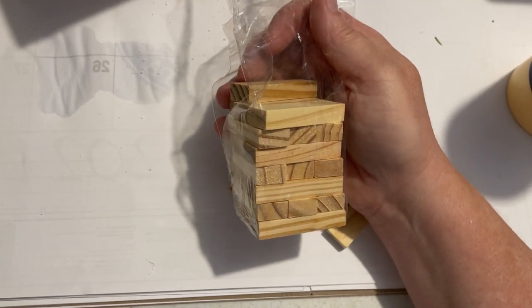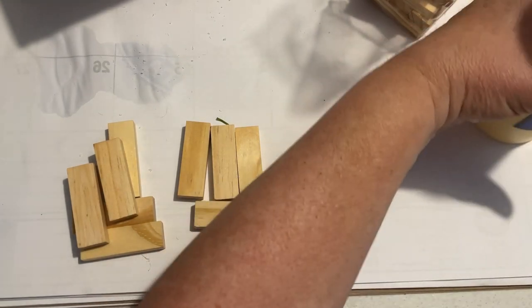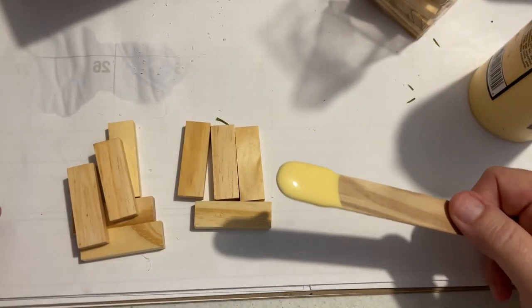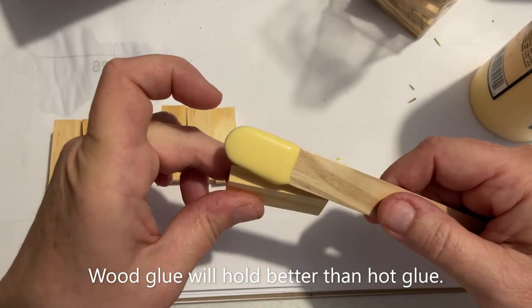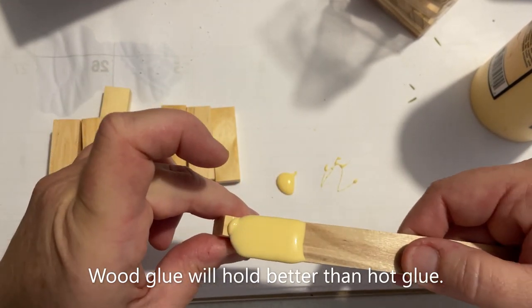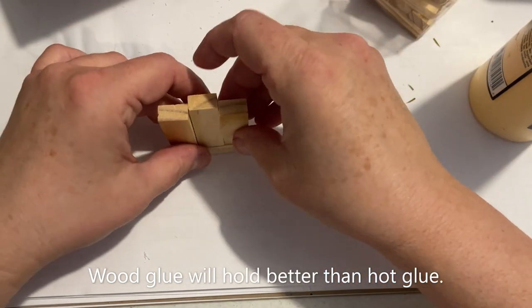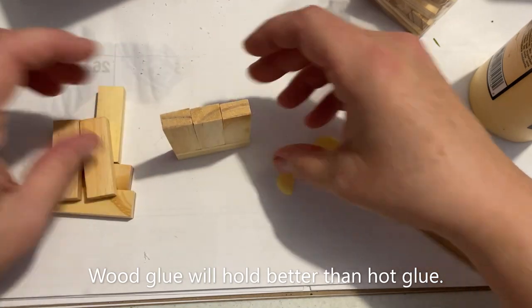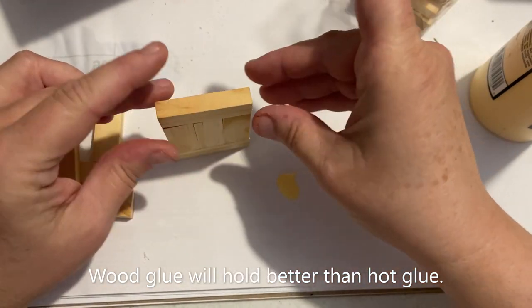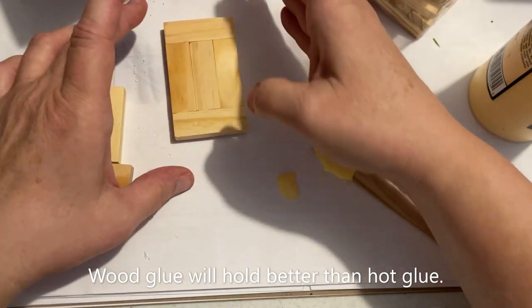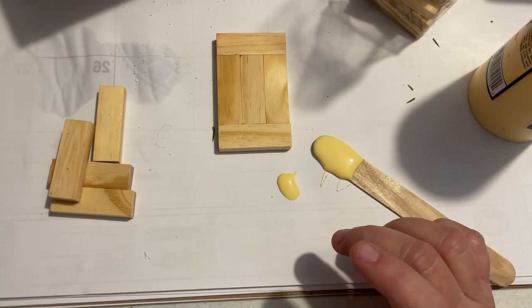So here we are with our Jenga blocks. Check out what I made with these. Now I had my wood glue out so I decided I wanted to use that because don't use hot glue when you're using wood. If you have wood glue use it because it just holds so much better. And actually it dries just as fast. Sometimes with the hot glue it's going to have a bulkiness to it. Wood glue will be smooth and you can just make it really nice and tight and it'll look so much better.